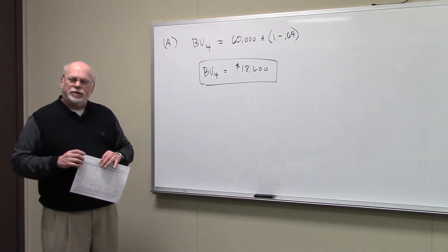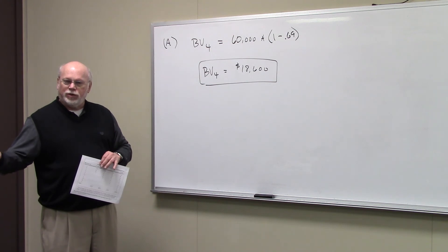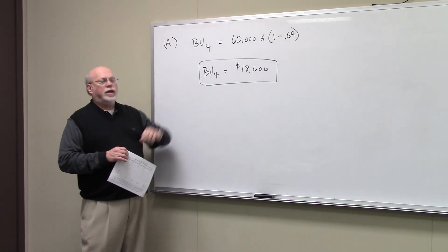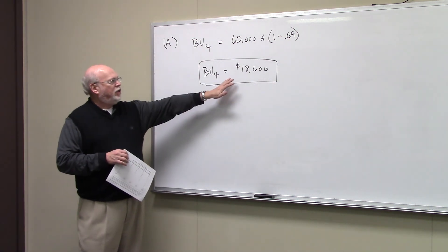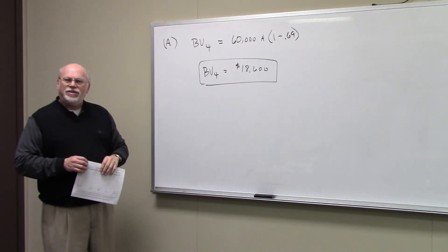Book value is whatever remains. So if you've written off 69%, that means there's only 31% remaining on the books. And so if you take 31%, or 0.31, multiplied by $60,000, you find the book value of the asset after four years to be $18,600.